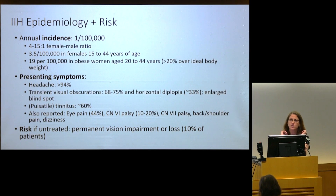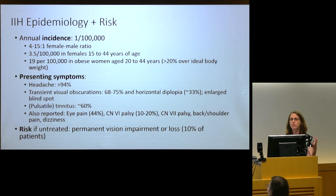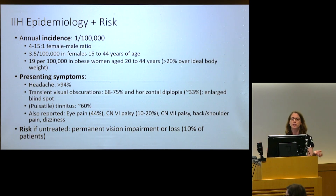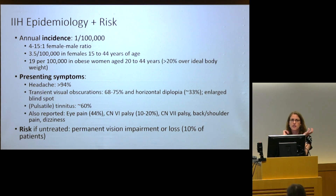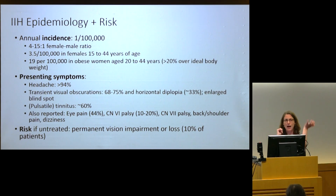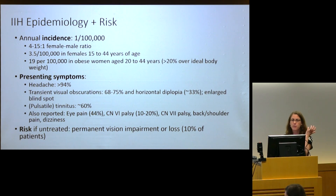Why this population? Looking at obesity: is it central abdominal obesity raising venous pressures and leading to venous congestion in the head? Or is it adipose tissue functioning as an endocrine organ, secreting something that raises pressure? The female preponderance is also very mysterious. We know certain endocrinopathies, birth control pills, and progesterone implants raise the likelihood of pseudotumor, and we see it in pregnancy, though hormonal mechanisms are not well understood. I'm a women's health neurologist, so this is an area of interest for me.